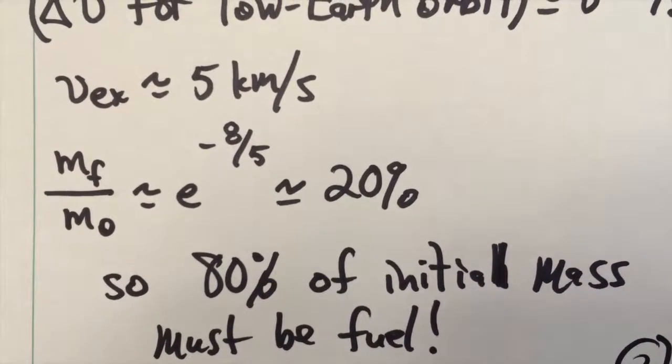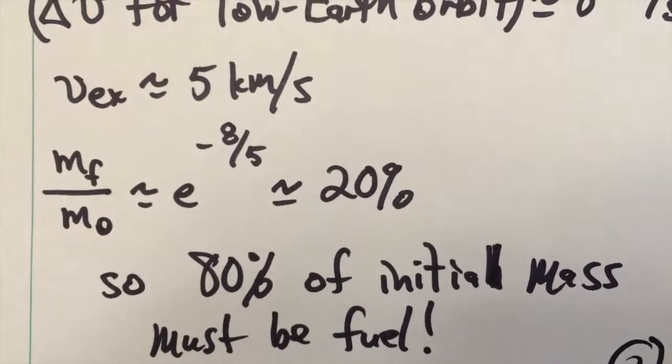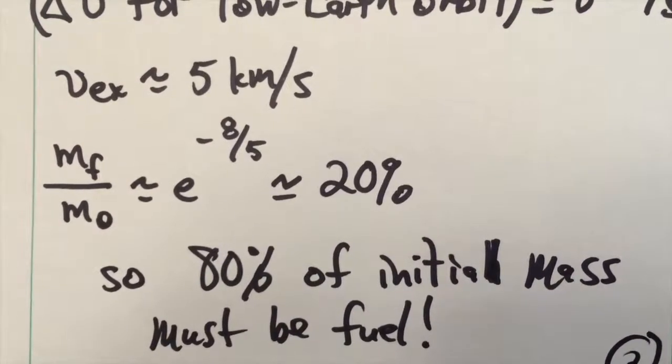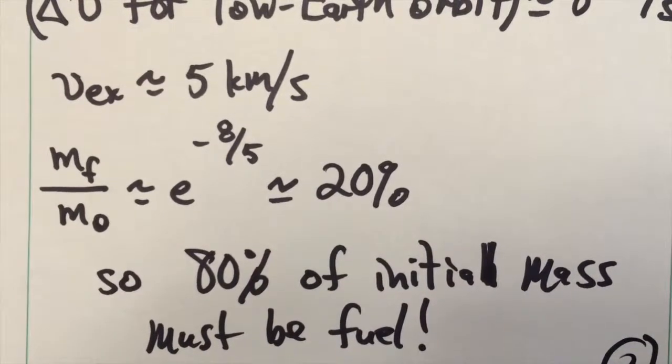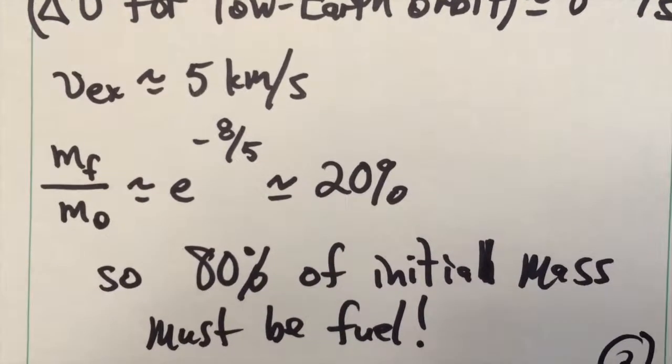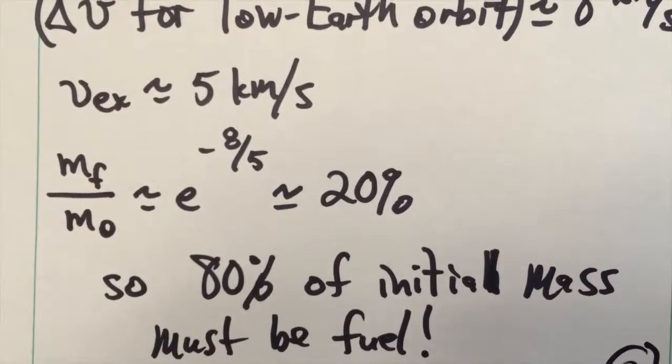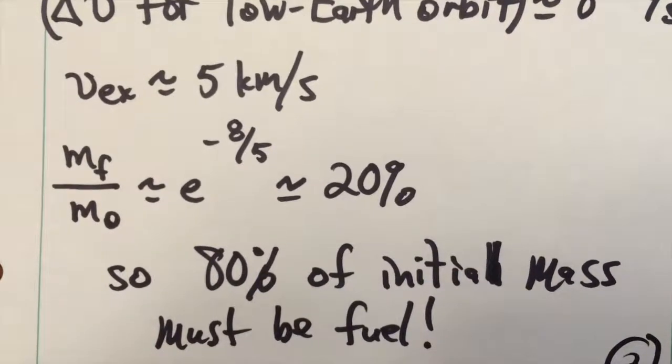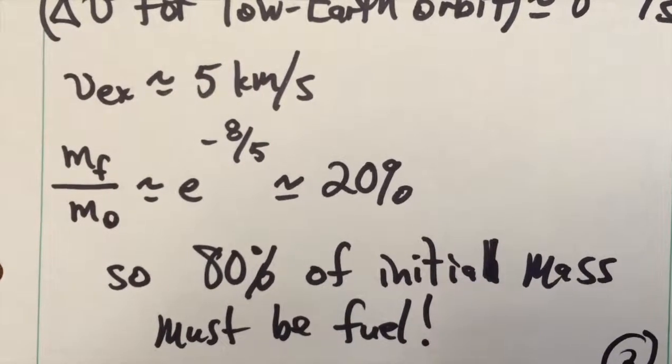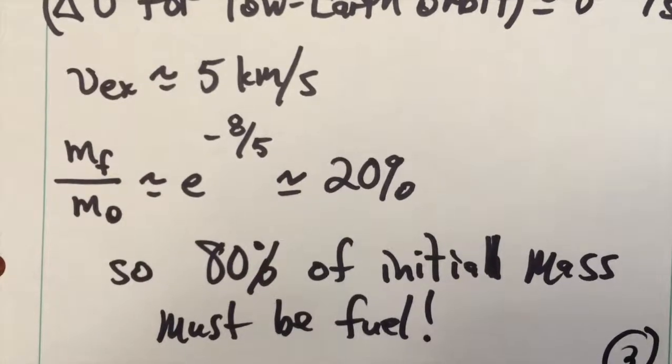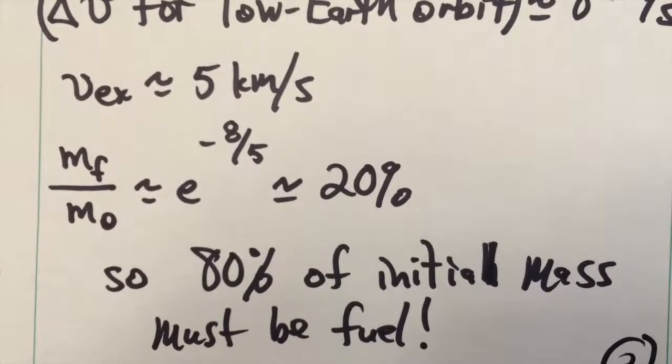Of course, the derivation we've looked at here ignores the fact that gravity is going to play a big role in decelerating the rocket. In fact, a rocket launch from the surface of the Earth does not have its momentum conserved. Gravity is constantly doing work against the rocket, and so you need really even more mass to be exhausted than we're showing here.